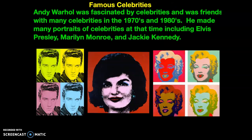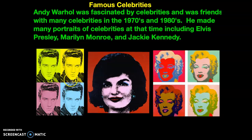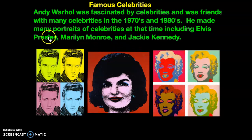Later on he decided to do celebrity portraits. Celebrities are famous people, so these are all famous people from the 1950s, 60s, and 70s. This is Elvis Presley, a very famous rock musician of the 1950s and 60s. This is Jackie Kennedy, who was the First Lady — the wife of John F. Kennedy, one of our presidents in the 1960s. And this is a very famous actress named Marilyn Monroe, who starred in many movies in the 1950s and 60s.